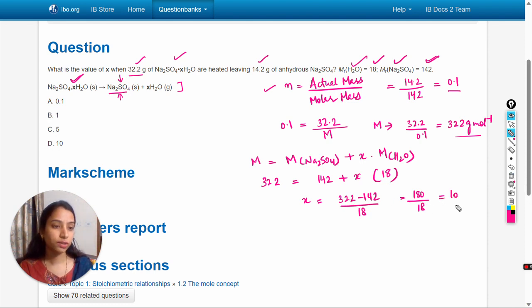The x value is 10, so the answer should be D option. Let's check the mark scheme.